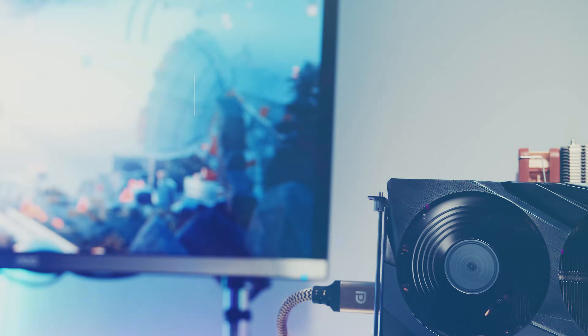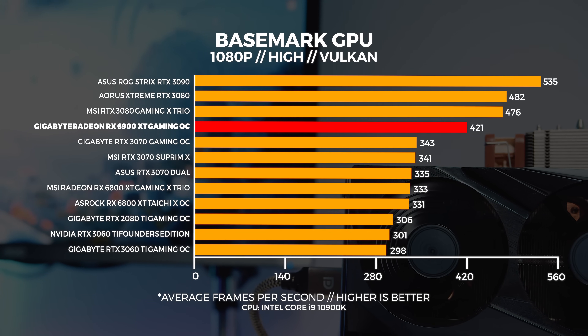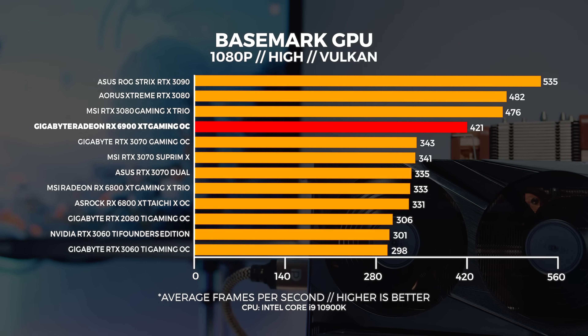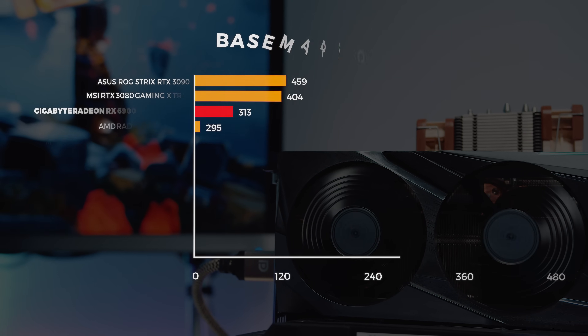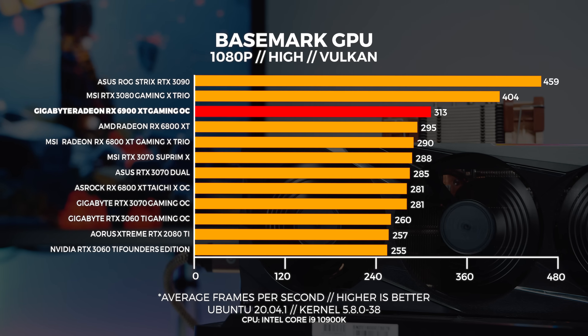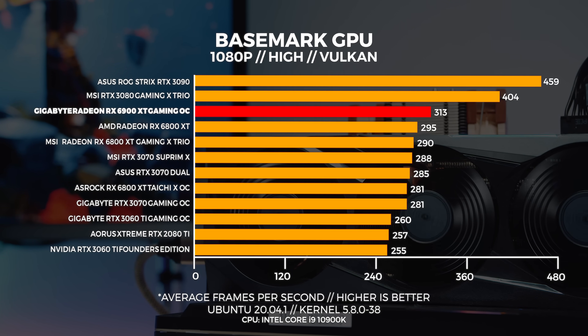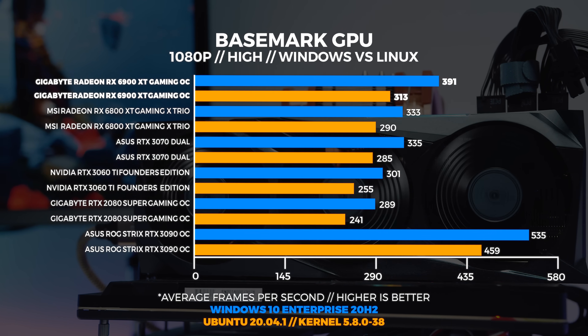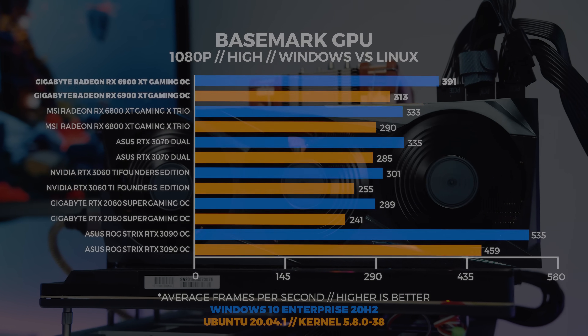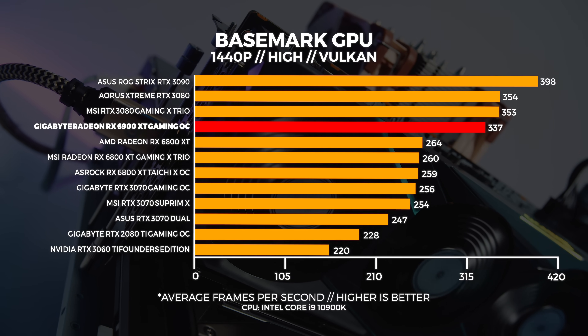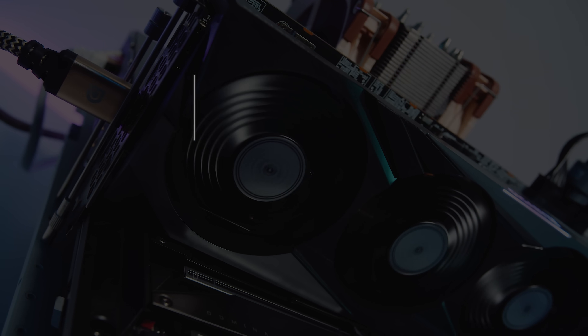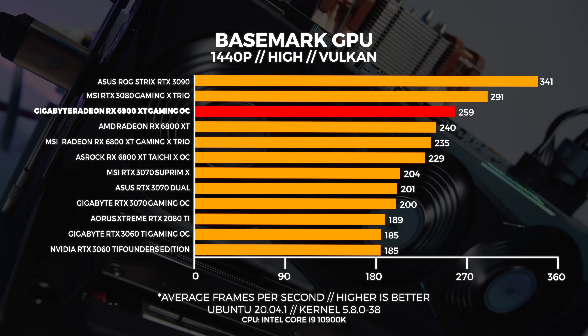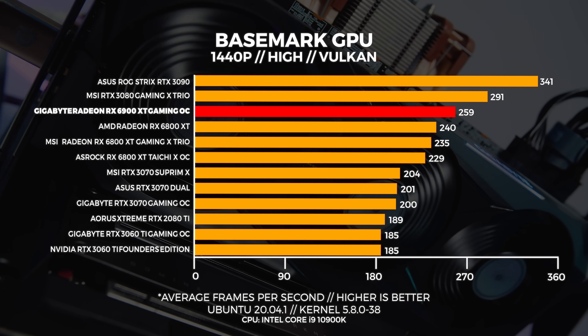Next up we've got BaseMark GPU, which gives us a great indication of Vulkan performance in both Windows and Linux. At 1080p in Windows, the 6900 XT is significantly faster than the 6800 XT but slower than the RTX 3080. In Linux at 1080p, the 6900 XT performs slightly faster than the 6800 XT but not by that much. At 1440p in Windows, the 6900 XT is much faster than the 6800 XT, while in Linux at 1440p the two cards are actually pretty close in performance.